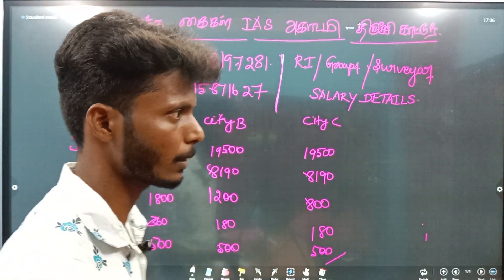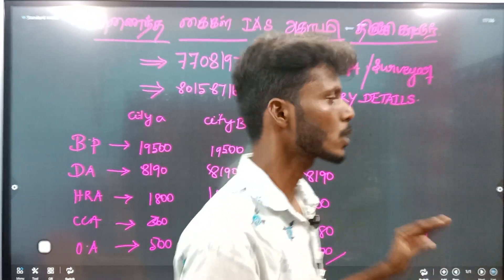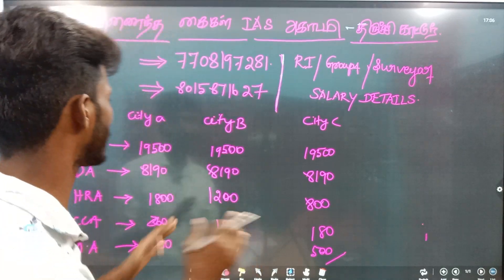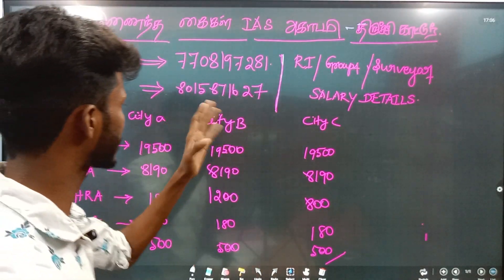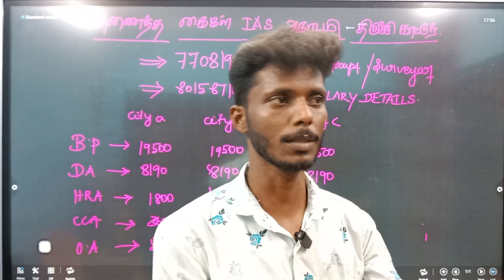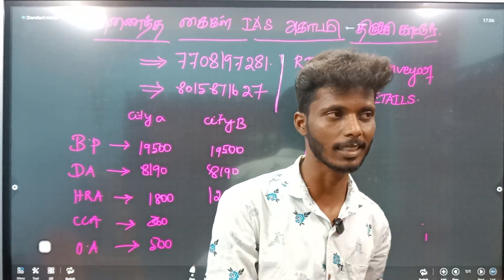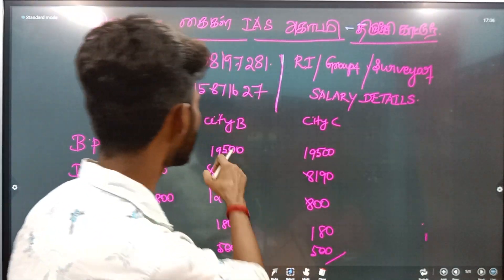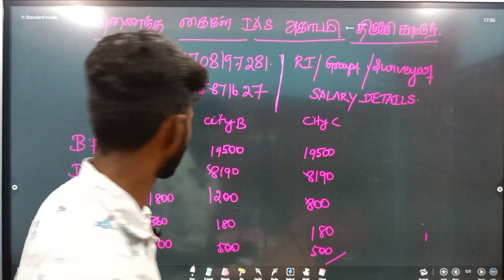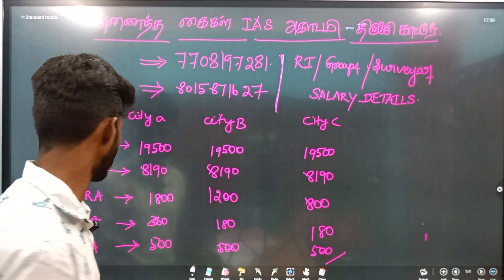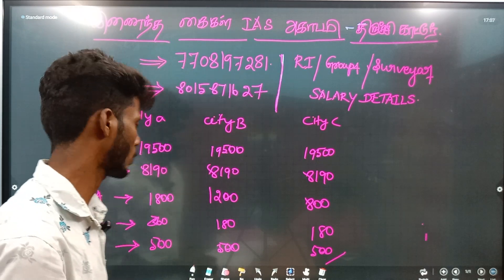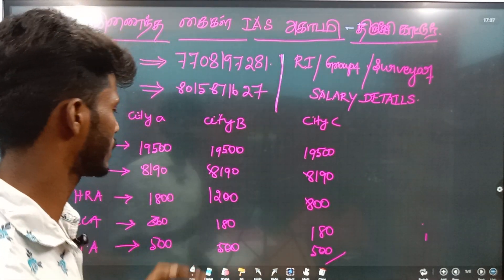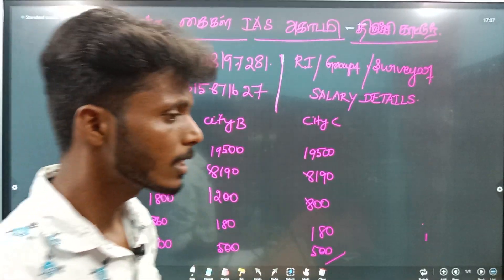In City B, the basic pay is ₹10,000. There are different allowances that apply. In terms of CTA, you have ₹15,000. The basic pay is ₹15,000, and the rent allowance is ₹50,000.